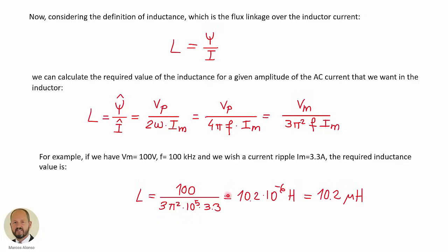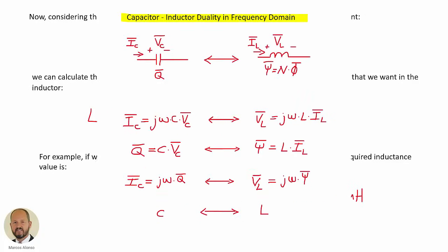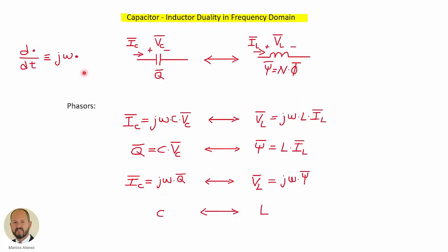This is equivalent to calculating the area of the flux linkage and applying the formula we have seen before. This is the final value obtained for the inductance. If you want more information about this example, please take a look at the previous video, Tips and Tricks number 15.